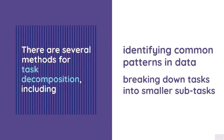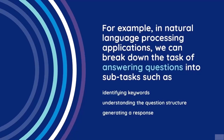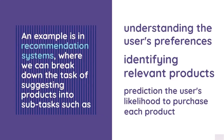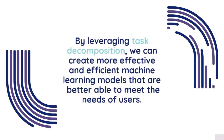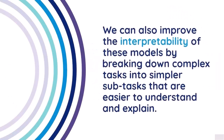There are several methods for task decomposition, including identifying common patterns in data and breaking down tasks into smaller subtasks. For example, in natural language processing, we can break down the task of answering questions into subtasks such as identifying keywords, understanding the question structure, and generating a response. In recommendation systems, we can break down suggesting products into subtasks such as understanding user preferences, identifying relevant products, and predicting purchase likelihood.